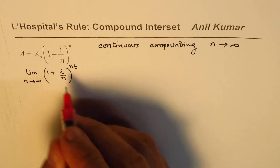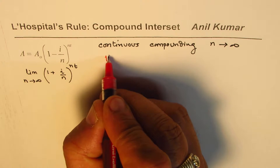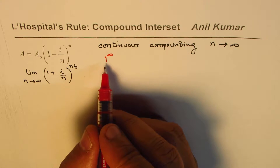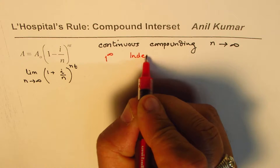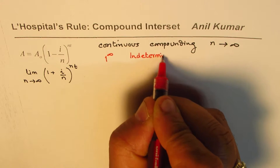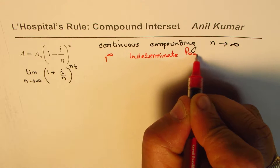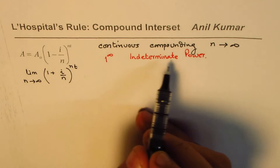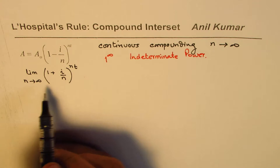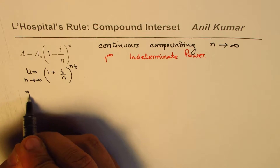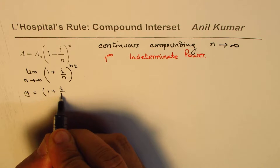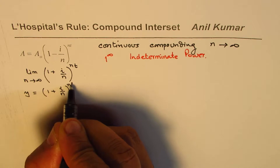As you can see, if N goes to infinity, i/n becomes 0 and the exponent becomes infinity, so this is the case of 1 to the power of infinity — an indeterminate form. We can apply L'Hôpital's rule here. For indeterminate powers, we need to take logarithms on both sides. So let us define the variable Y as equal to (1 + i/n)^(nT).